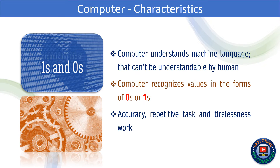Computer understands machine language that can't be understood by humans. It recognizes values in the form of zeros or ones. Accuracy, repetitive task handling, and tirelessness are the main characteristics of a computer system.